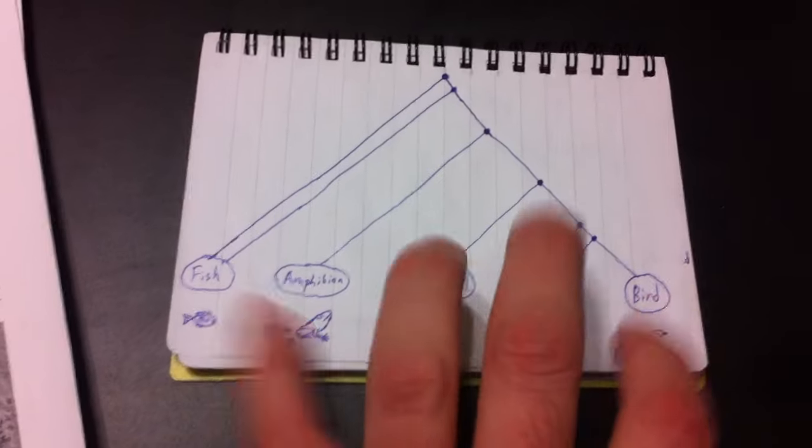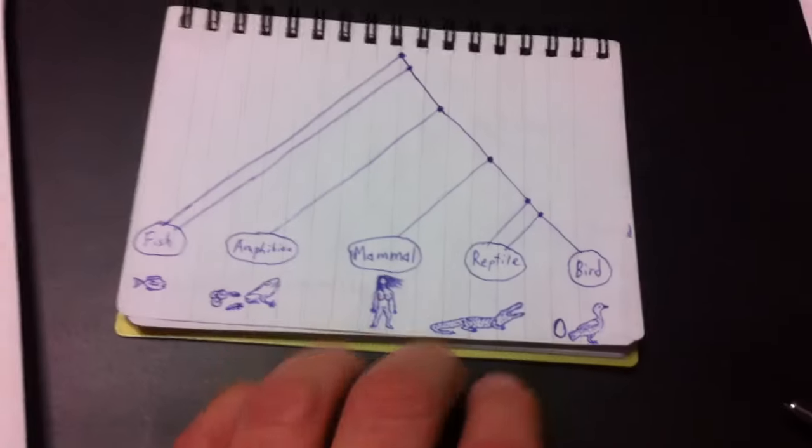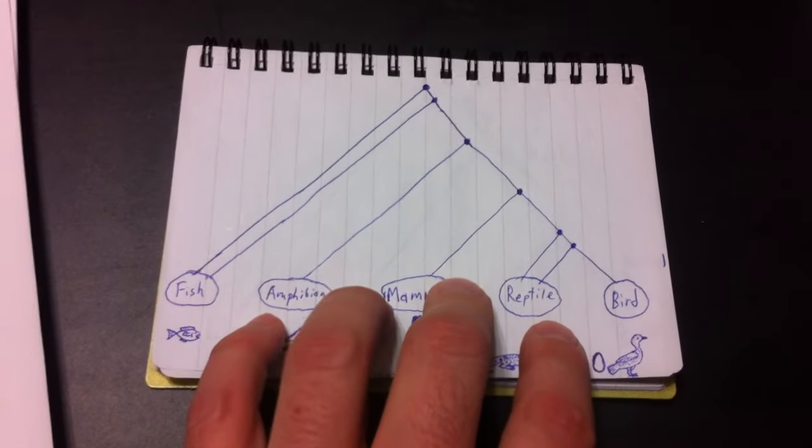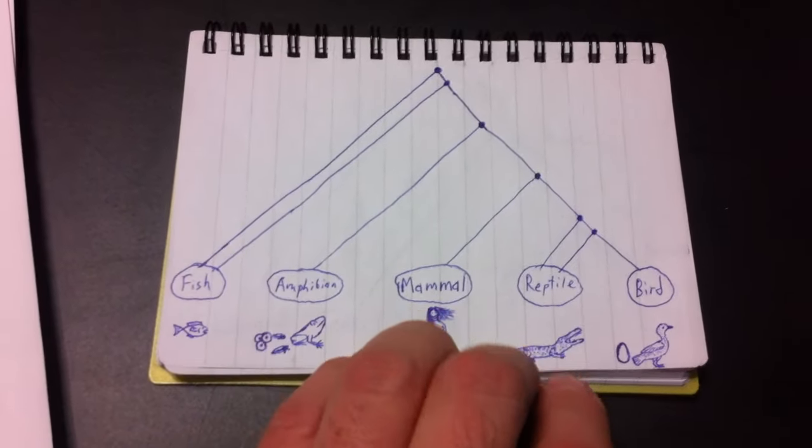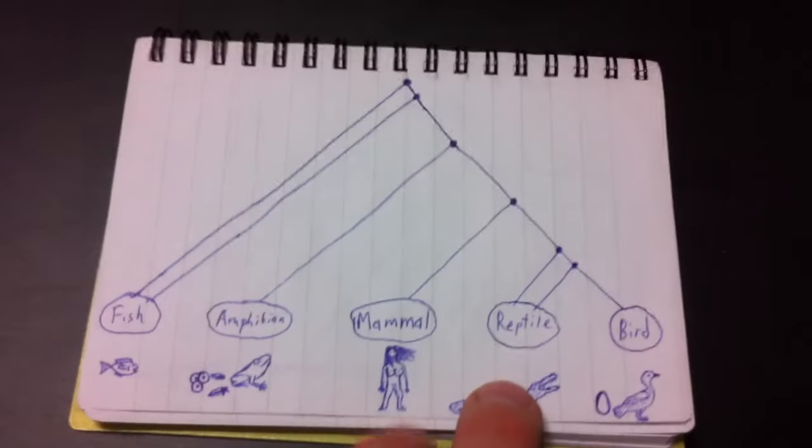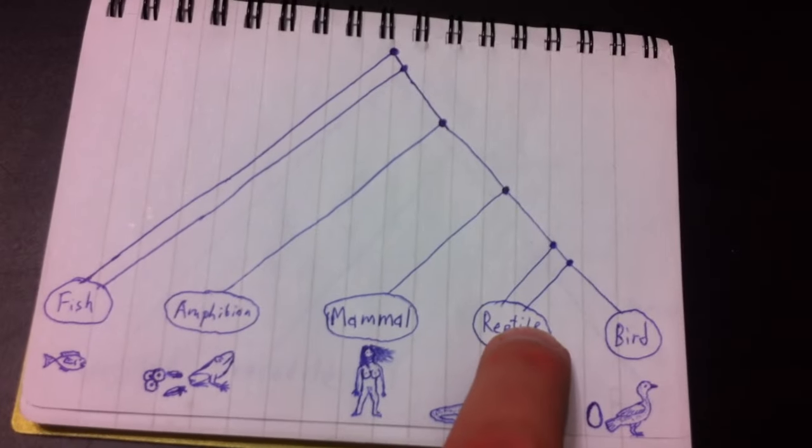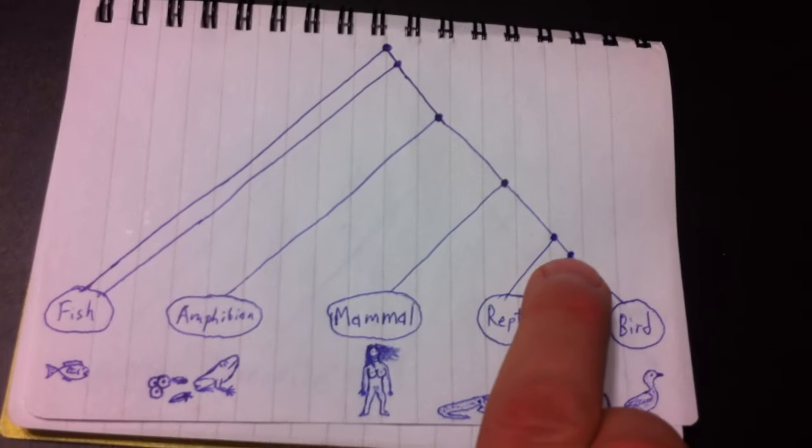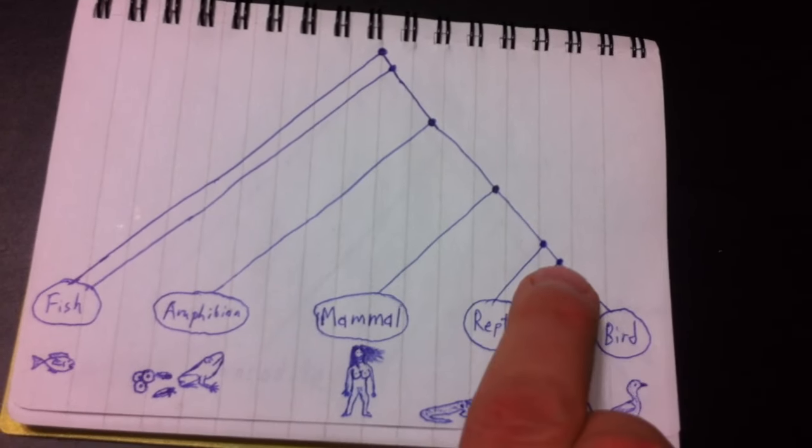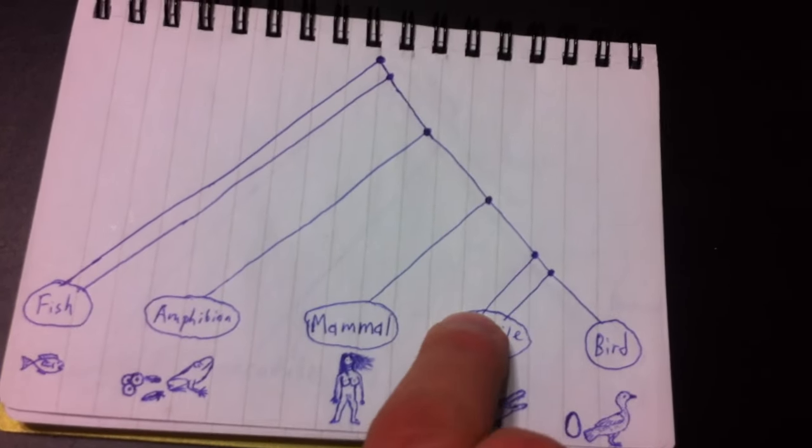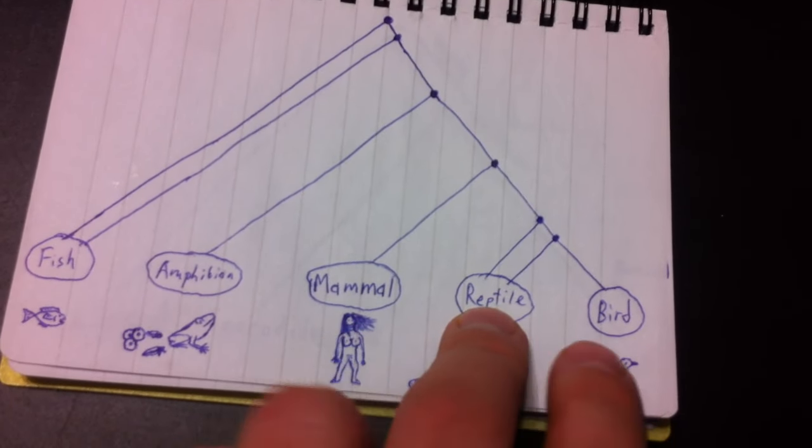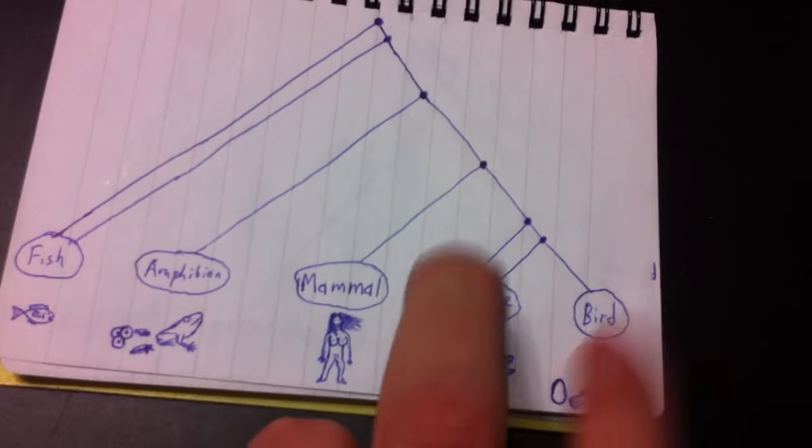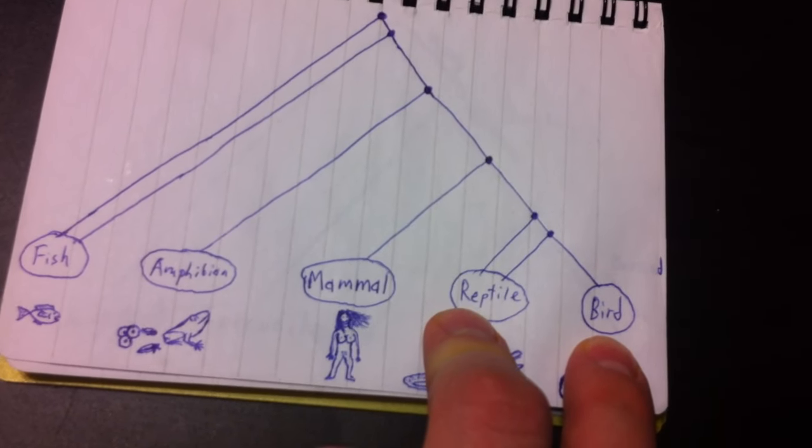So genetics reveals this branching pattern by looking at the similarities and differences in DNA. And one of the things that genetics has revealed is that crocodiles share a more recent common ancestor with birds than they do with lizards. Now, if that's the case, then we're going to run into a problem when we start looking into the fossil record. And here's why.